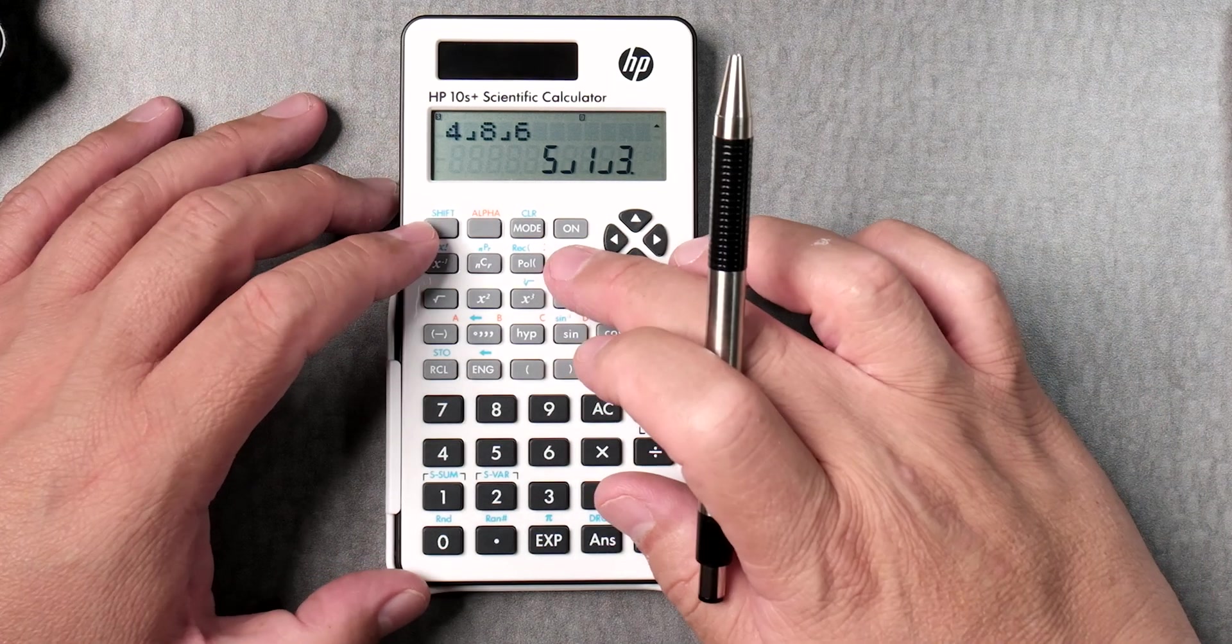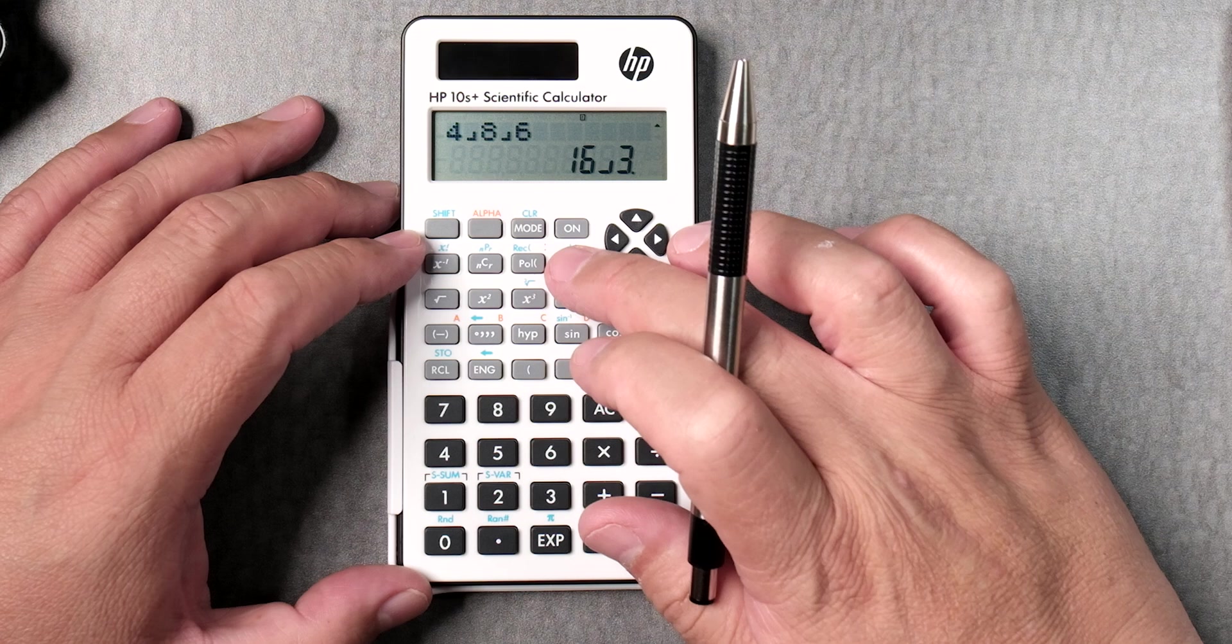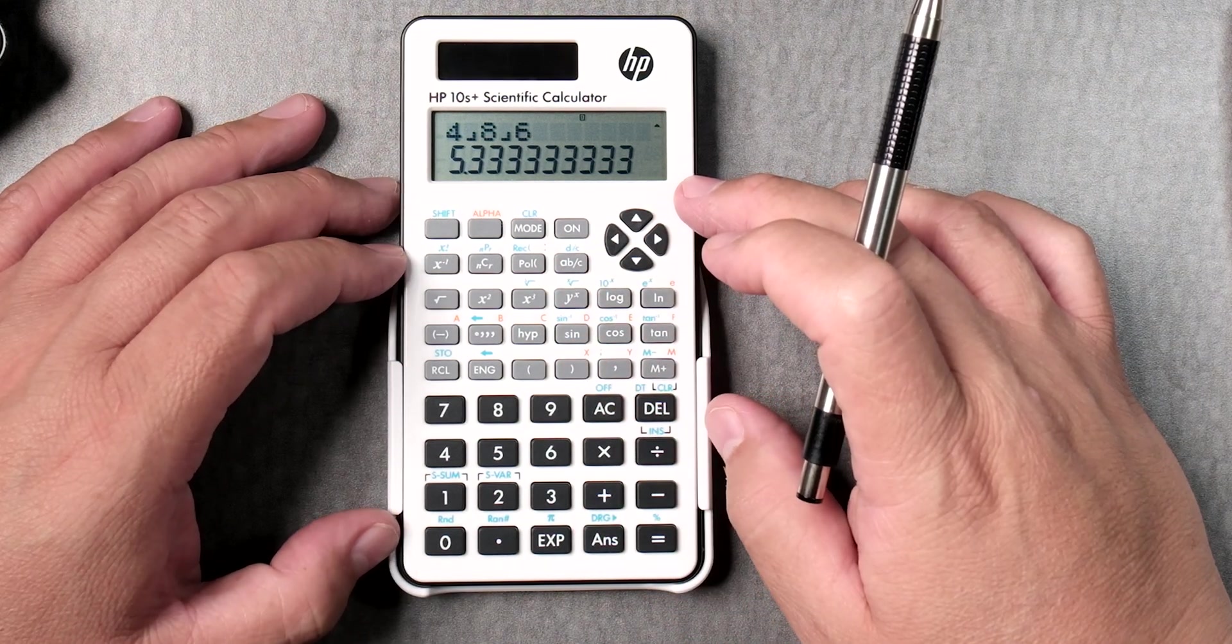You can go shift, d, c, gives you the improper fraction. Press the a, b, c button, gives you the decimal equivalent. That's nice.